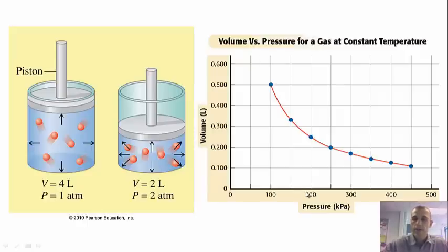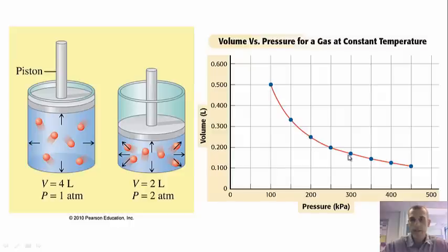When you look at this graph, pressure is on the x-axis and volume is on the y-axis. It tells you that they are inversely proportional to each other. As my volume starts decreasing, my pressure starts increasing. The graph could go the opposite direction: if I start increasing my volume, then my pressure will start to decrease.